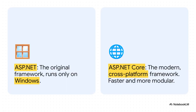This is a big one — you absolutely have to know the difference between the old-school ASP.NET and the modern ASP.NET Core. The main takeaway is this: ASP.NET Core is the present and the future. It's cross-platform, which is a game changer. It runs on Windows, macOS, and Linux. Plus, it's been rebuilt from the ground up to be faster and more modular, making it perfect for today's cloud-based applications.